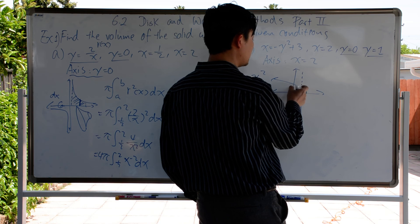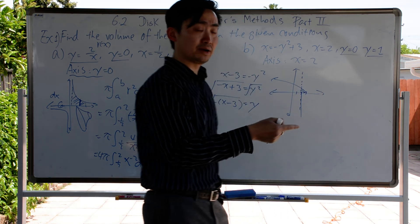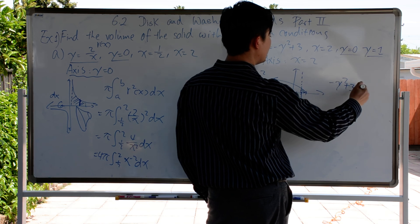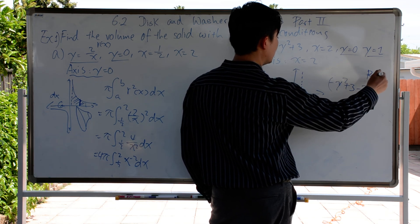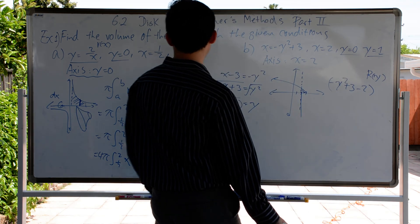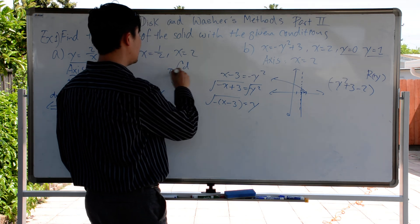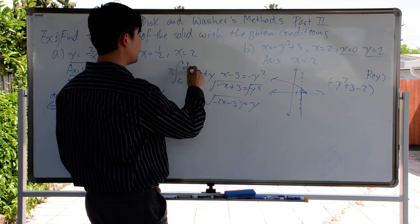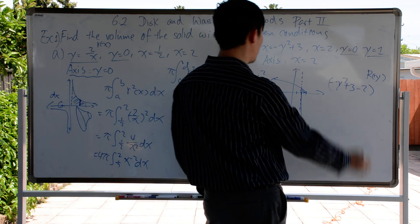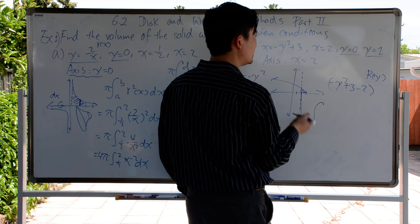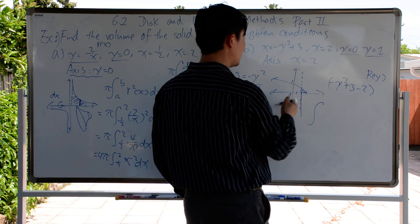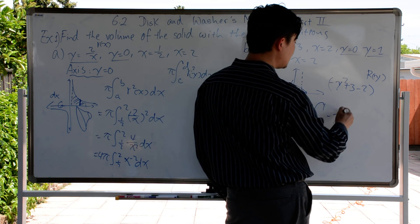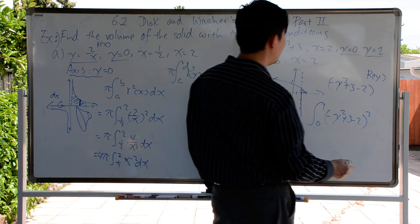So it's negative y squared plus 3 minus 2. This whole thing is considered r(x) or r(y). Another formula we have is the integral from c to d times pi of r(y) squared times dy. This one is just a radius. The integral is from 0 to 1. So negative y squared plus 3 minus 2, quantity squared, times dy. Don't forget about pi — that's what we use in the Disk Method.